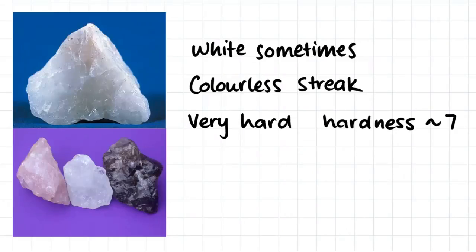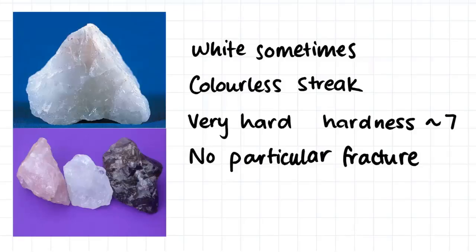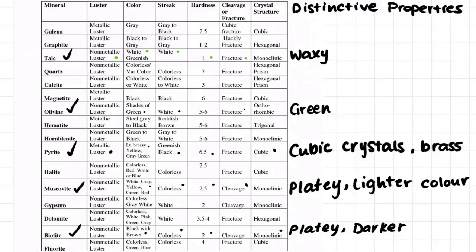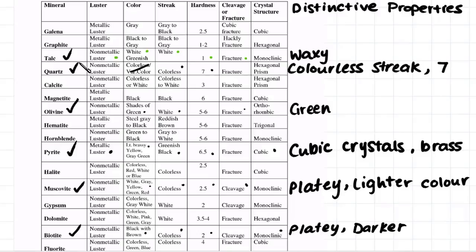Here's another sample. We see that it is sometimes white, but it can take up other colors as well. We do a streak test and it has a colorless streak. It has a hardness of around 7, and it seems that it has no particular fracture pattern. This mineral is quartz. The main thing to look for in quartz is its hardness and its colorless streak — we often cannot rely on the color of the rock itself.